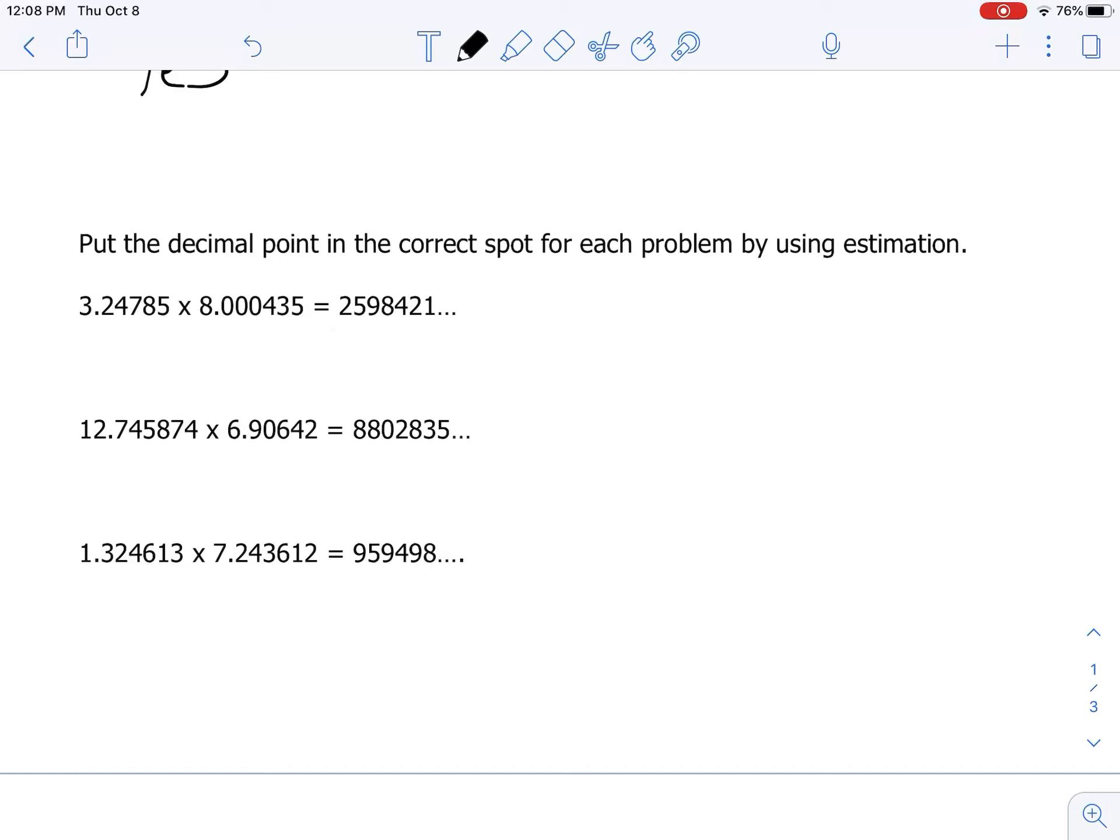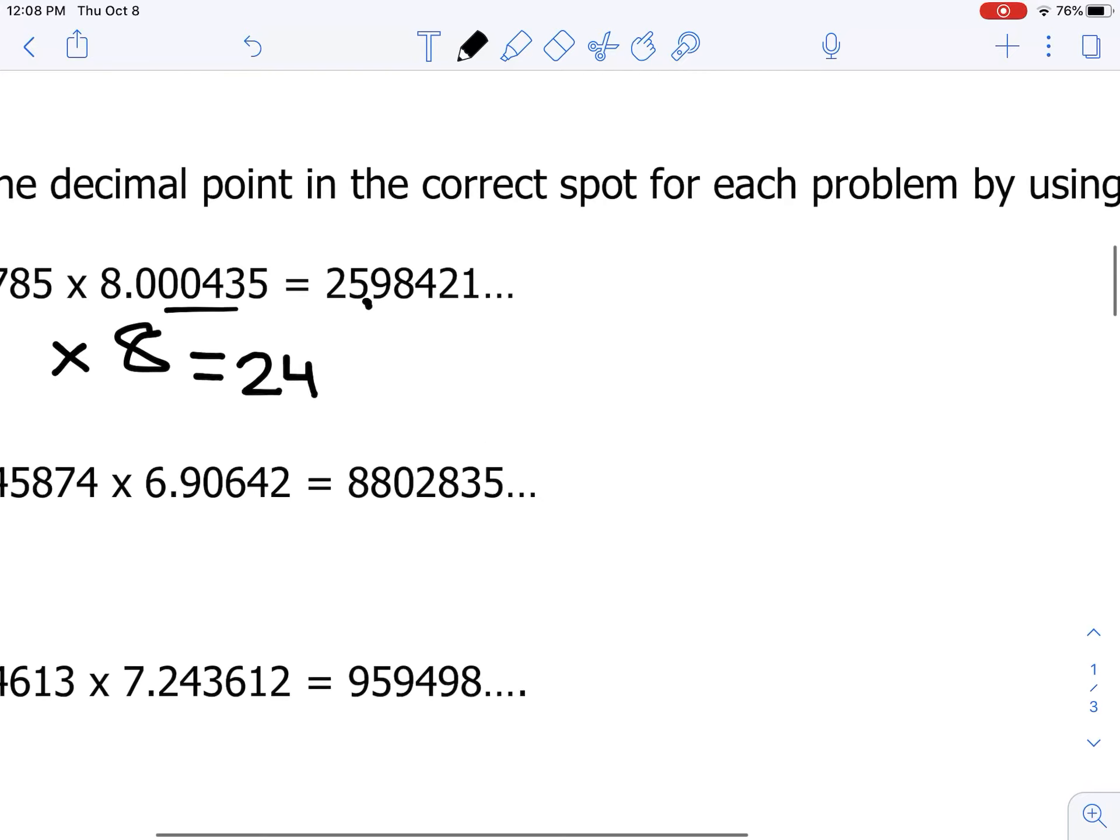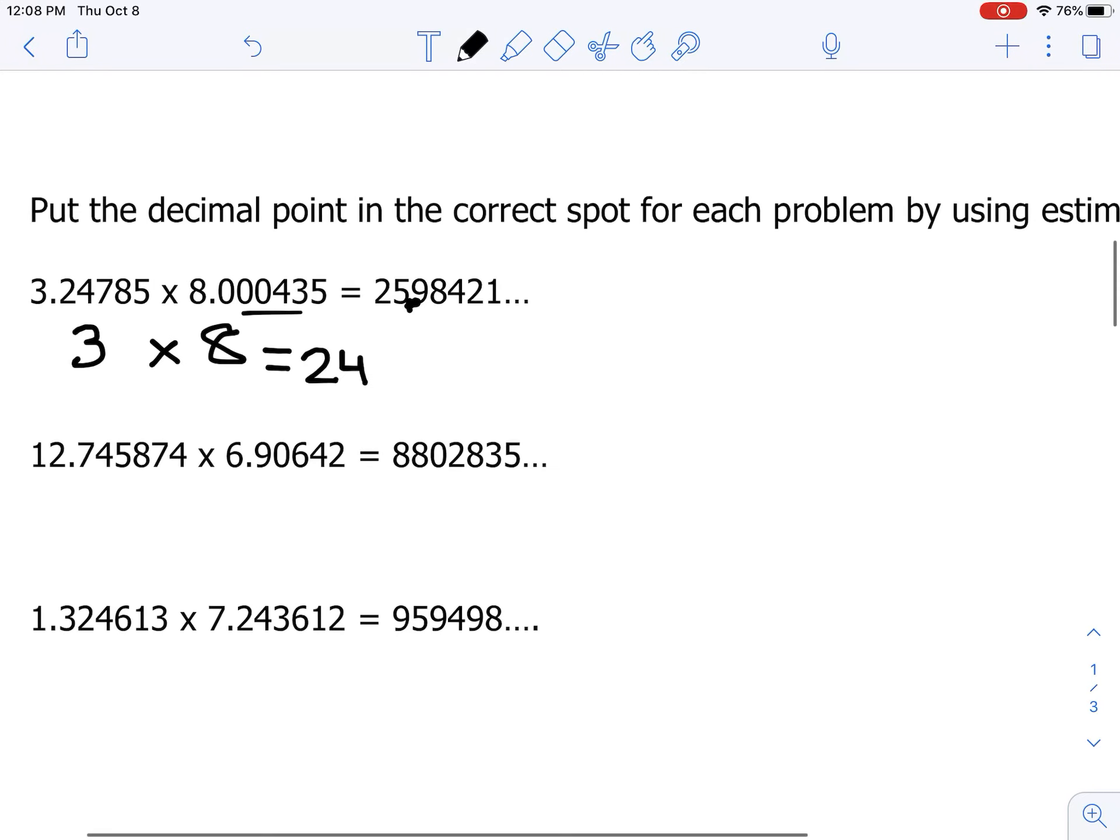Okay, so 3.24785 is really close to 3, or closer to 3 than it is to 4. So I'm going to round it to 3. This number here is close to 8, so I'm going to round it to 8. And when we multiply, we get a product of 24. So if I'm looking to place the decimal point to make sure this number here is close to 24, I would have to put it between the 5 and the 9 here. That would be the appropriate spot, and it would be 25.98421.